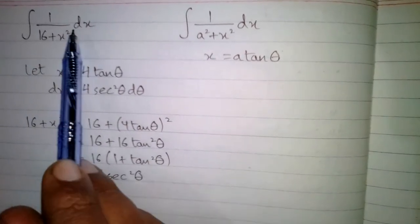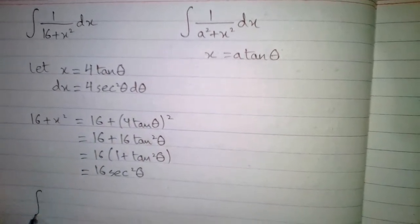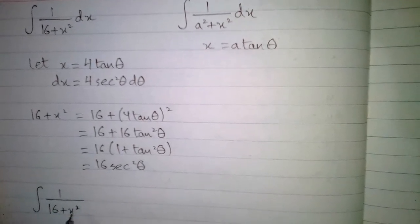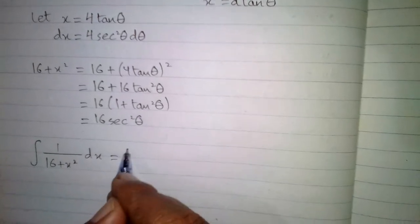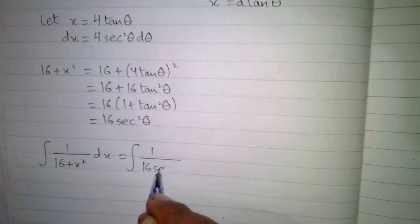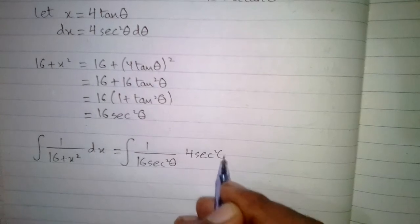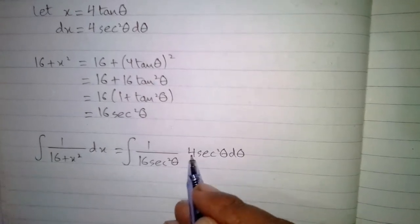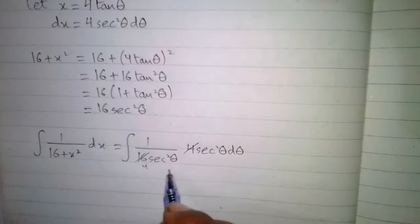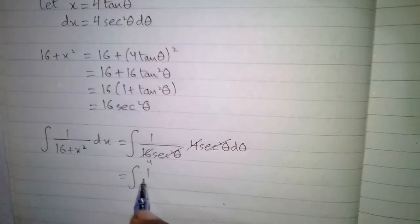So we put 16 sec square theta in place of 16 plus x square, and 4 sec square theta d theta in place of dx. The integral becomes 1 upon 16 sec square theta, multiplied by 4 sec square theta d theta. We can cancel 4 and 16 to get 4 in the denominator, and also cancel sec square theta, leaving the integral of 1 upon 4 d theta.